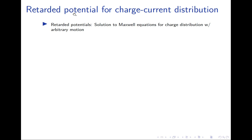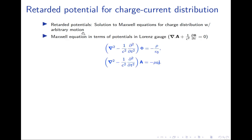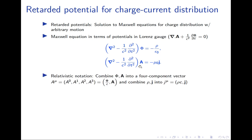Retarded potentials are a solution to Maxwell's equations for a generic charge distribution when charges are moving with arbitrary velocities. Let's recall the Maxwell equations in terms of potentials. The Maxwell equation in terms of potential, especially in its Lorentz gauge, looks very pleasant. You have phi and A. The scalar potential has a scalar source which is the charge density, and the vector potential has a vector source which is the current density.